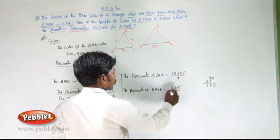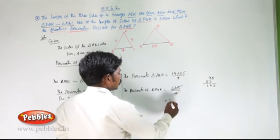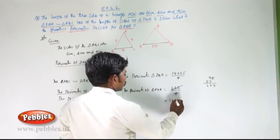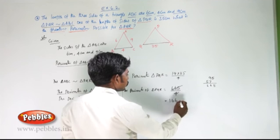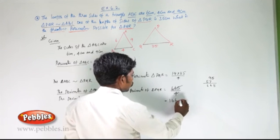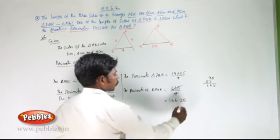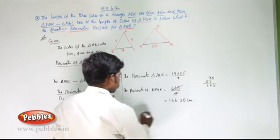By cancellation, 1 four is 4, 6 fours are 24, 2 fours are 8, 5 fours are 20. That is 166.25 cm.